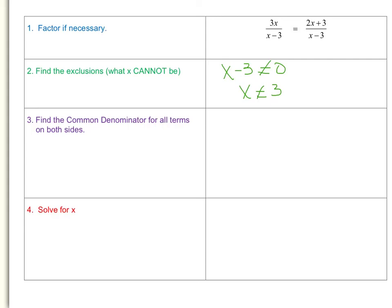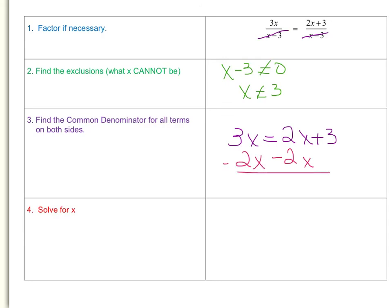In this equation, the denominators are already common — both are x minus 3 — so we don't even need to find a common denominator. Since they already match, we can go ahead and cross out the denominators. We are now working only with the numerators: 3x equals 2x plus 3. Subtracting 2x from both sides gives x equals 3.